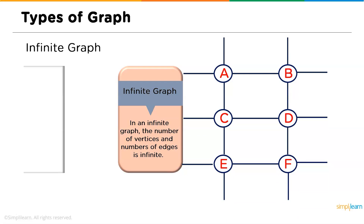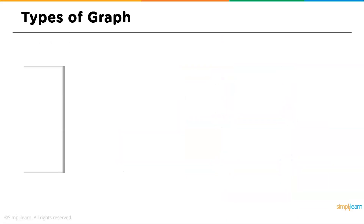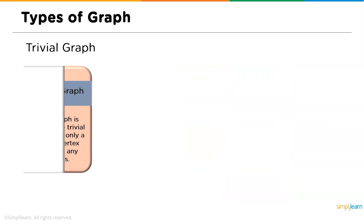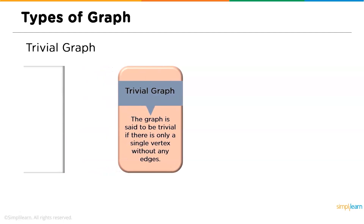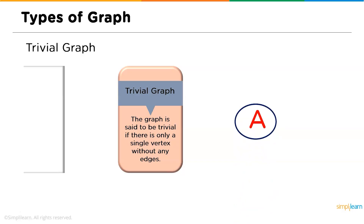The image here is an example of a typical infinite graph. Followed by that we have the trivial graph: a graph is said to be trivial if there is only one single vertex without any edges. In a trivial graph we have just one single vertex — no more than one — and there will be no edge, not even a self-loop.